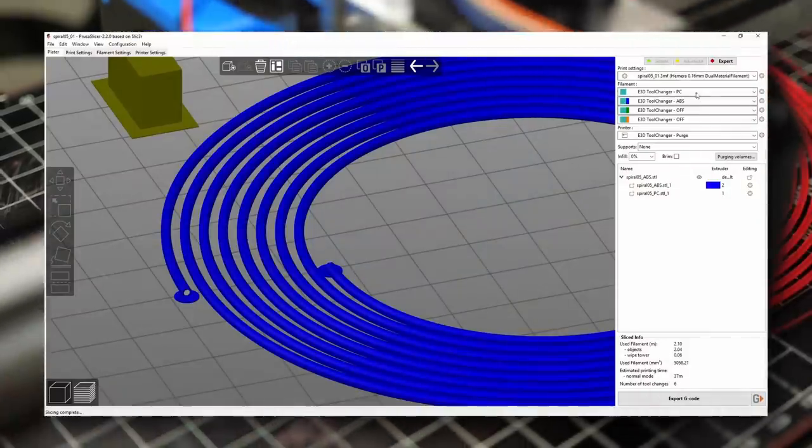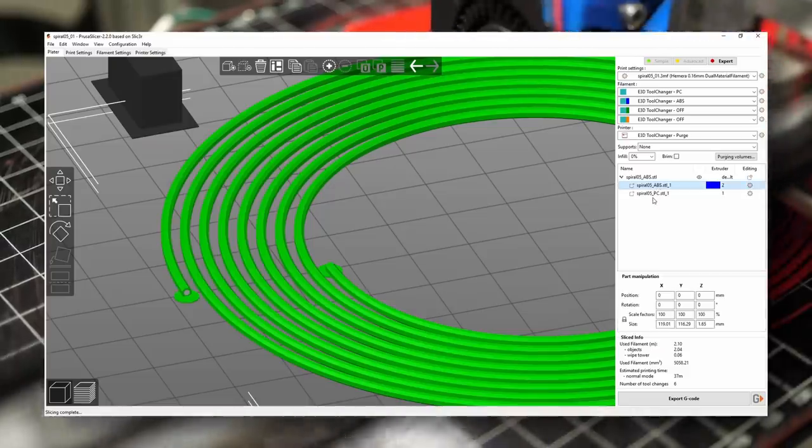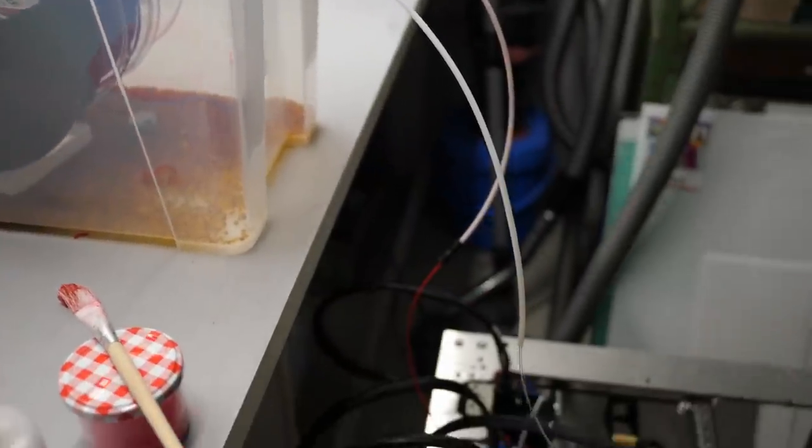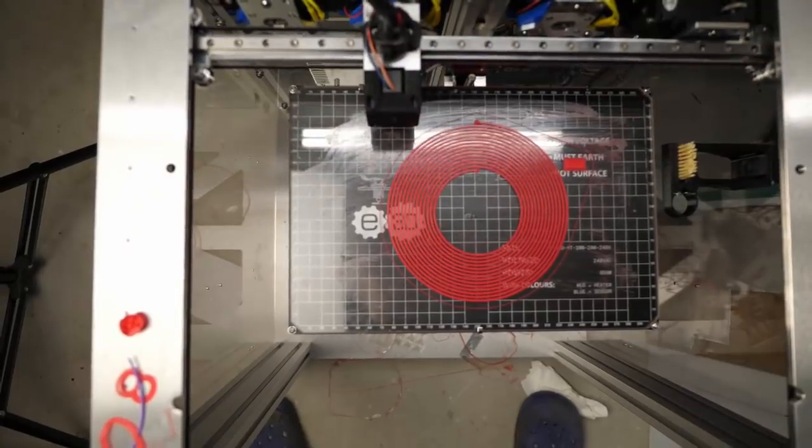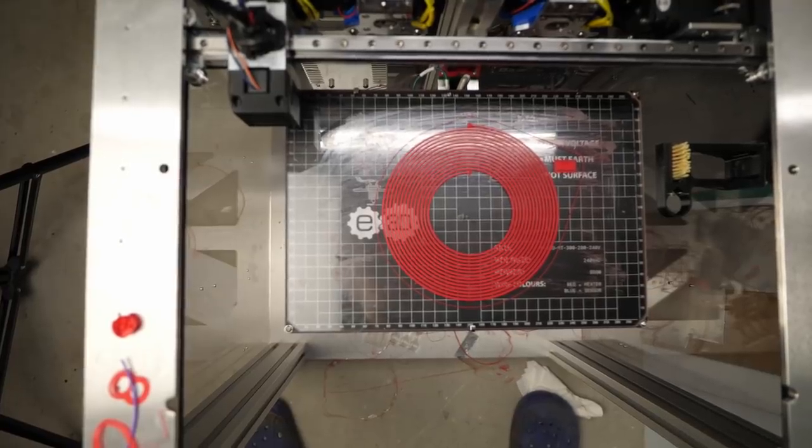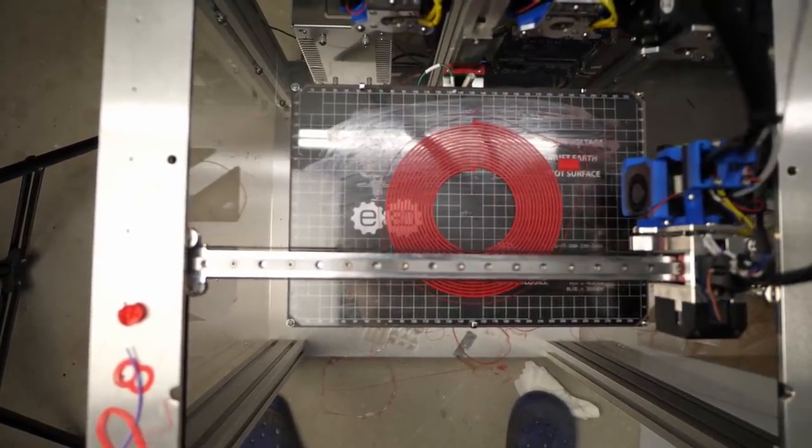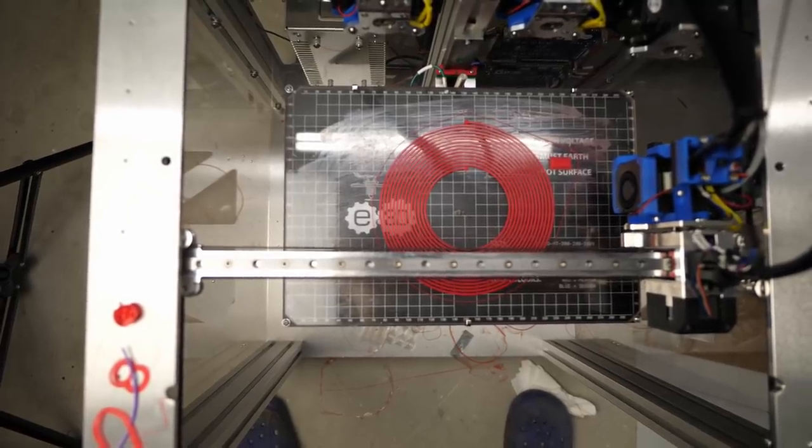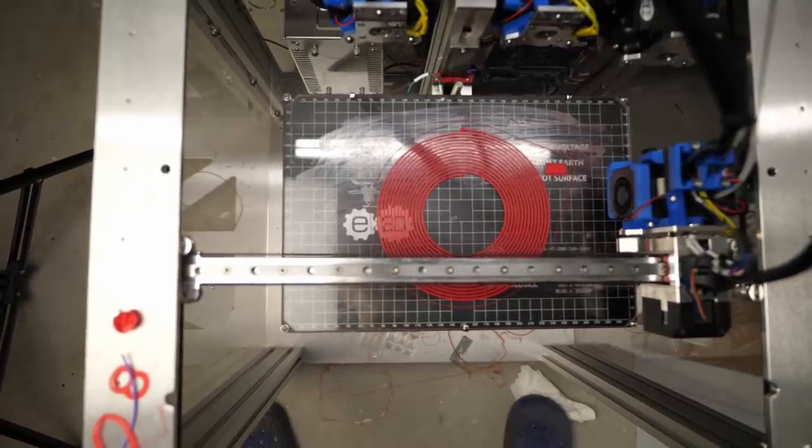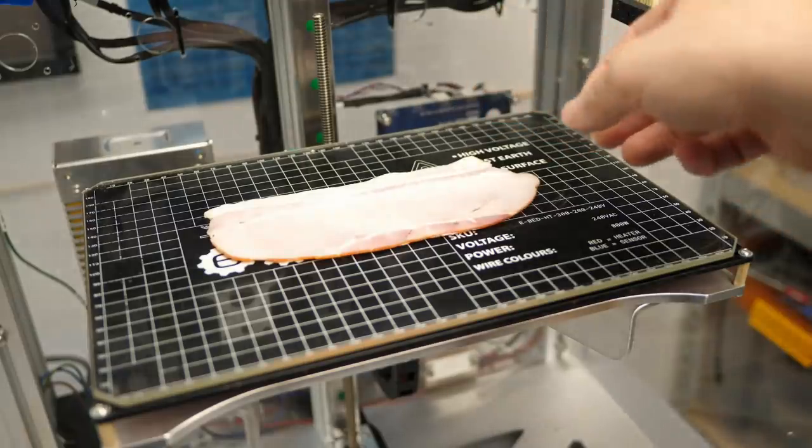In the slicer, I handled the spiral like a normal multicolored print and assigned one part to the ABS tool, the other one to the polycarbonate tool. E3D's toolchanger is a great printer for such experiments because it has individual toolheads, so individual nozzles to extrude the filament which prevents contaminating one of the polymers with the remains of the other one and you don't have to worry about purging. Together with the AC heated bed that heats up quicker than the nozzles make it great for printing even demanding materials because it can go all the way up to 200 degrees Celsius.